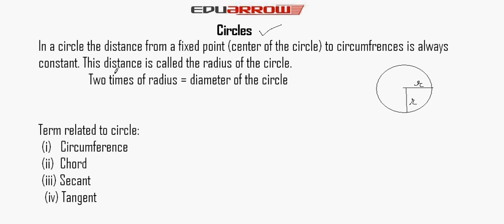Two times the radius is equal to the diameter of the circle. If we extend the radius, r plus r is equal to 2r. So 2r is equal to d, the diameter of the circle.